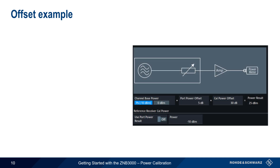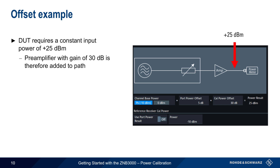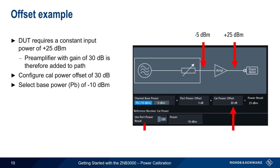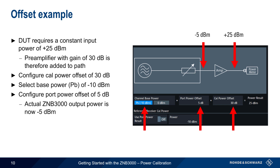Here's an example using offsets. Our device under test requires a constant input power of plus 25 dBm, and a pre-amplifier with a gain of 30 dB is placed between the ZNB3000 and the device. We configure a CalPower Offset of 30 dB to match the gain of the pre-amp. To obtain plus 25 dBm at the DUT, the ZNB3000 output must be minus 5 dBm. Therefore, we set the ZNB3000 base power to minus 10 dBm and set Port Power Offset to 5 dB, so that the actual ZNB3000 output power is minus 5 dBm. Once power calibration is completed, the input to the device under test will be minus 5 plus 30, or plus 25 dBm.